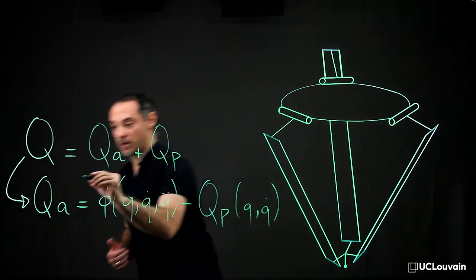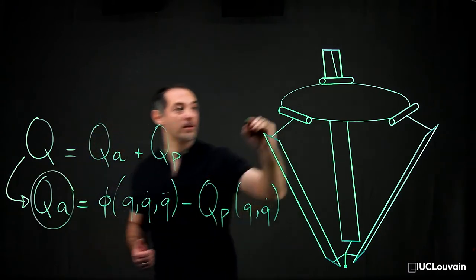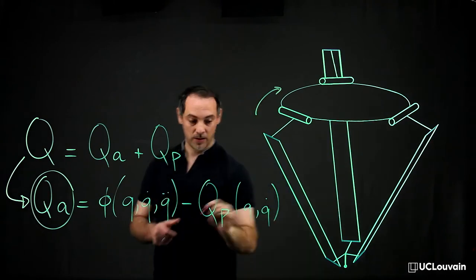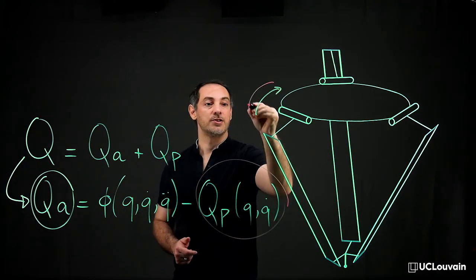This means Q_a, for example, at this joint, and Q_p at this joint.